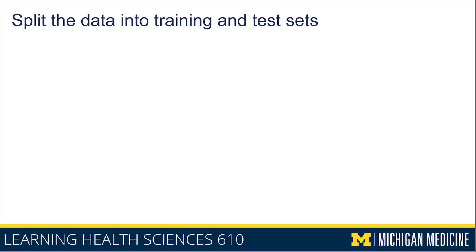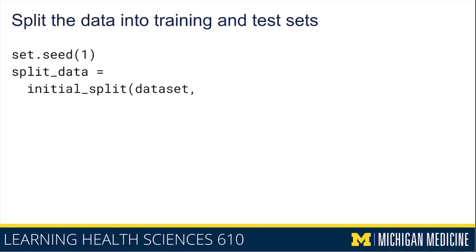Now let's start going through the step-by-step process to train and evaluate our data. The first thing we have to do is split our dataset into a training cohort and a test cohort, and we can do that using the initial_split function. I'm setting the seed and assigning the result to a variable called split_data, and I specified a proportion of two-thirds, which means two-thirds of the patients go into the training split and one-third go into the test split.